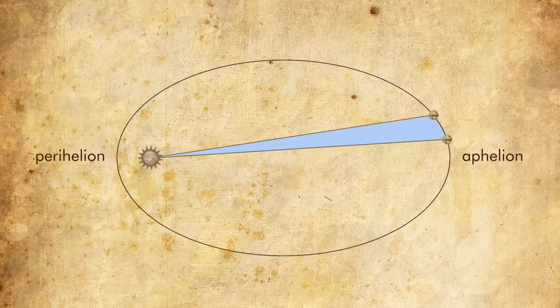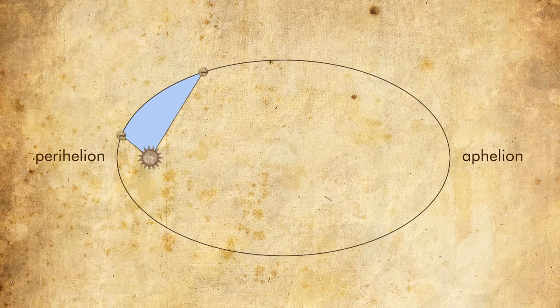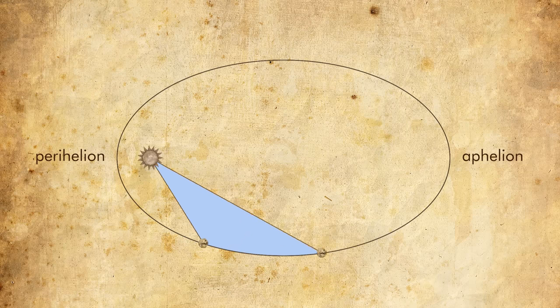In the first case, the line connecting Mars to the Sun is very short, but because the planet is moving faster, it covers a lot of distance.